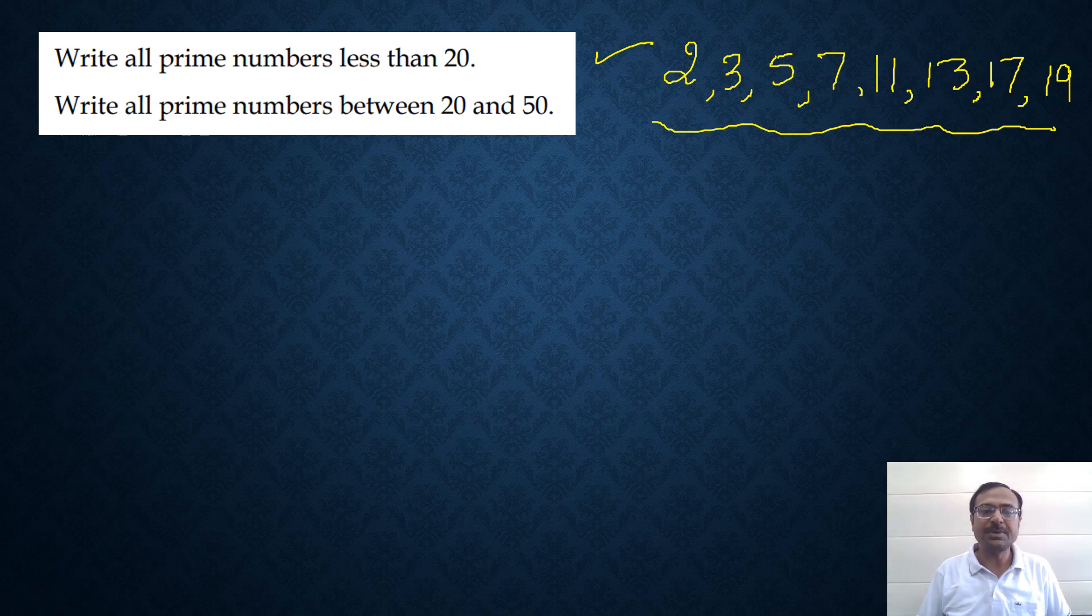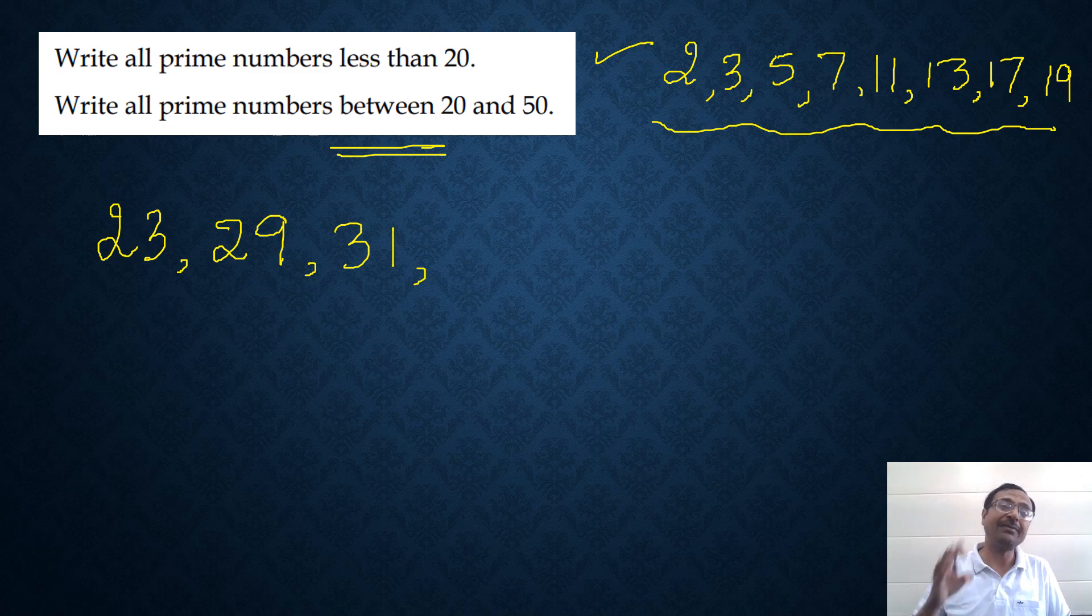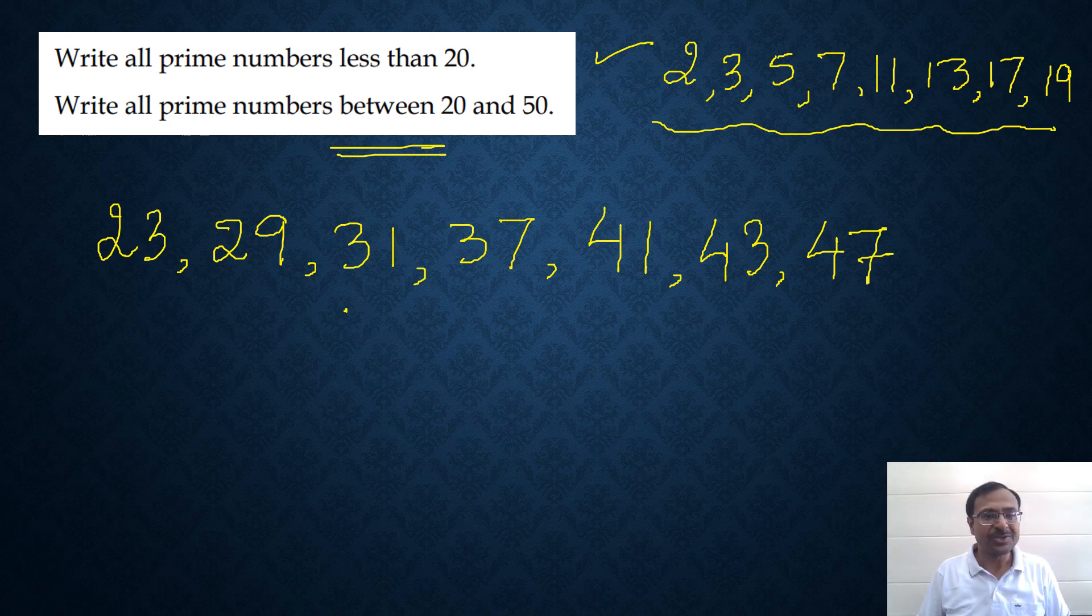Now write all prime numbers between 20 to 50. From 20 onwards, if you see 21 is divisible by 3, 22 is even, 23 is the first prime after 20. 24, 25, 26, 27, 28 are not prime. 29 is prime. 30 is obviously not prime, 31 is prime, and then 32, 33, 34, 35, 36 are all composite numbers. Then we have 37 as prime. 38, 39, 40 are all composite, then 41 is prime, 43 is prime. After that 44, 45, 46 are not primes. We have only 47 as prime. So these are all the prime numbers from 20 to 50. Now you know all the prime numbers from 1 to 50 using these two questions.